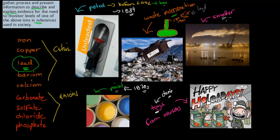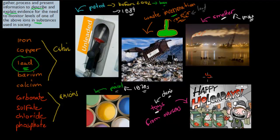Also smelters — ones that smelt ore — which is to do with mining itself. Smelters would have some lead inside the ore, and when they smelt it all, the exhausts would often have lead in them as well. So these are five sources of lead.